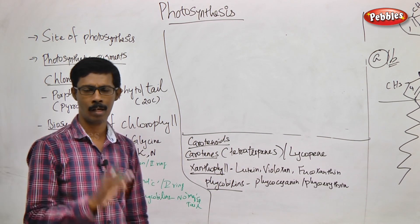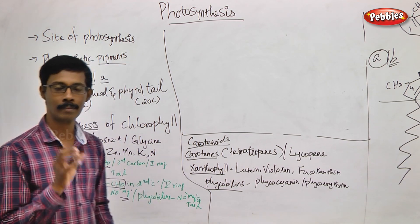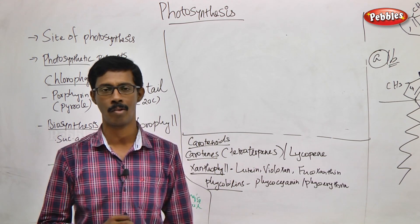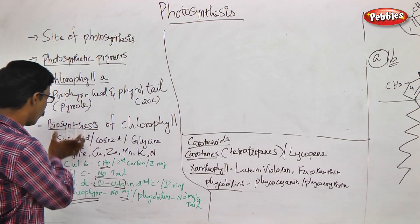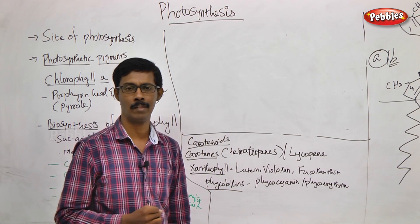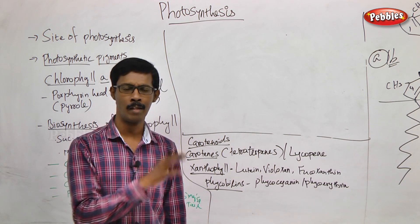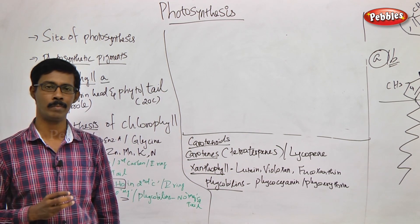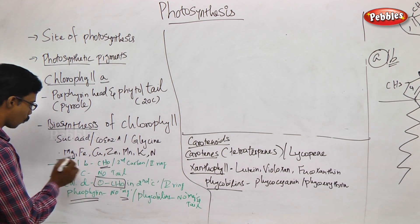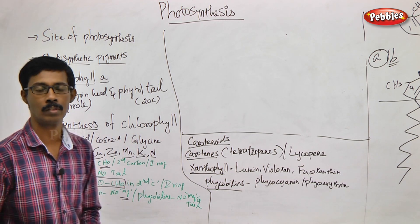Regarding the biosynthesis of chlorophylls: we discuss this in relation to respiration and the Krebs cycle. A major intermediary molecule called succinic acid combines with Coenzyme A and the simplest amino acid, glycine, and they participate in the synthesis of chlorophylls. Many minerals are also necessary for the synthesis and activity of chlorophylls - including magnesium, nitrogen, oxygen, and potassium, which participate in the biosynthesis of chlorophylls.